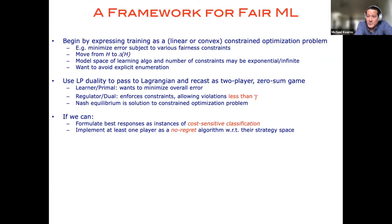So if we can formulate best responses for the two players as cost-sensitive classification problems, and by a classic result due to Freund and Schapire, we can implement at least one of the two players as a no-regret algorithm with respect to their strategy space, then you have an algorithm that provably converges in polynomial time to an approximate equilibrium of the original game and therefore of your constrained optimization problem.